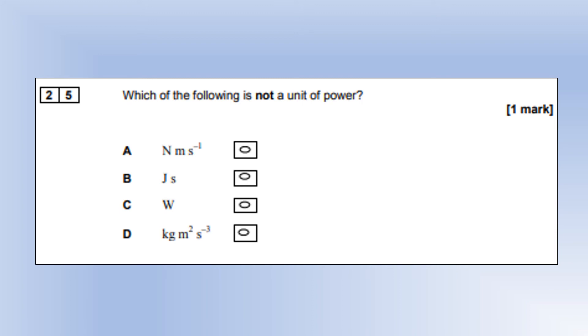Which of the following is not a unit of power? I can eliminate C straight away because the watt is a unit of power. Then we're just breaking things down into base units. A watt is a joule per second. A joule is a newton meter, and a newton is a kilogram meter per second squared. So we've seen A, we've seen D, and joule seconds is not quite a unit of power. Joules per second would be.